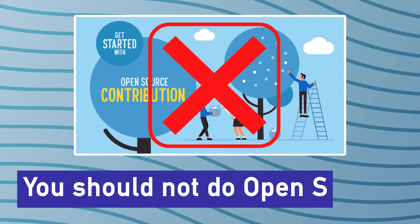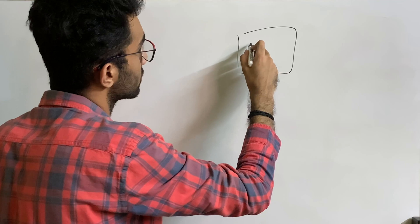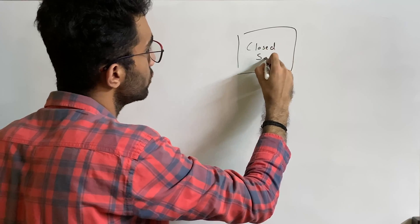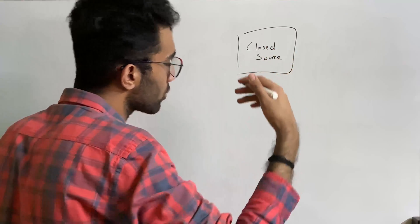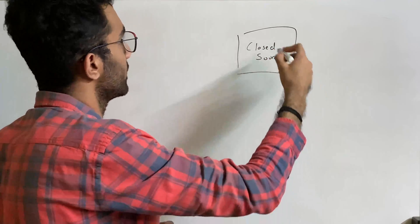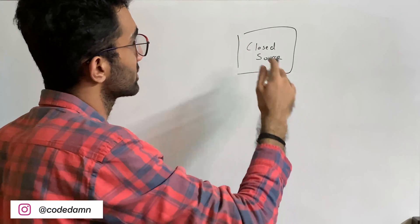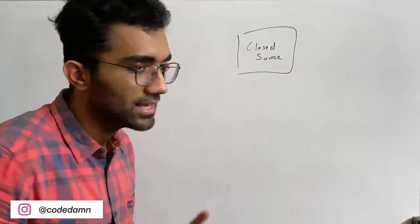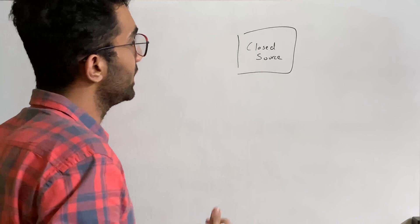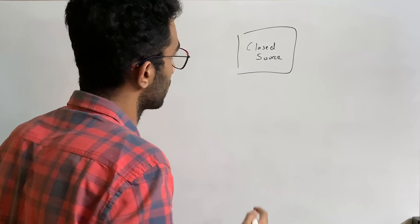So in the first stage of your open source development, I do believe that you should not do open source — this should be closed source. That is where you develop your own projects and push them on GitHub. Don't get me wrong about the definition: I'm saying open source means you're working on some big or medium to big size projects. That is what I mean in this video context.